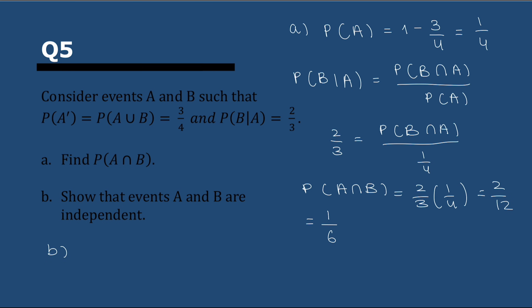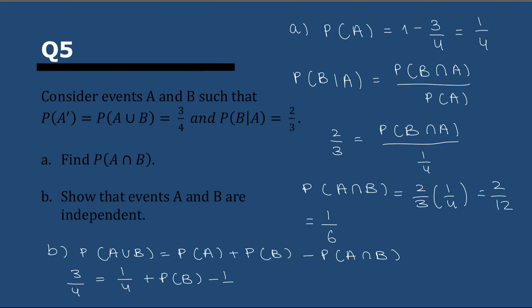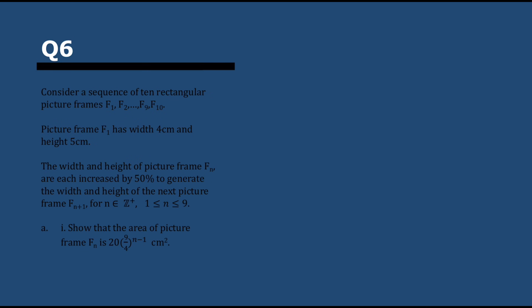In part b, we have to show that events A and B are independent. We first need to find P(B). Using P(A ∪ B) = P(A) + P(B) − P(A ∩ B), we know all values except P(B), so we solve to get P(B) = 2/3. Since P(B) = 2/3 is the same as P(B|A) = 2/3, that means B is not conditional on A — so A and B are independent.